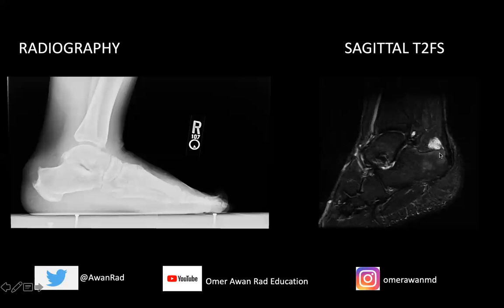We have this prominence or osseous protuberance along the posterior superior calcaneus — this is known as the Haglund deformity. We have three findings: the Haglund deformity, retrocalcaneal bursitis, and distal Achilles tendinopathy. You can appreciate all of these on the x-ray as well. The Haglund deformity with a prominent posterior superior process of the calcaneus, distal Achilles tendinopathy with thickening of the tendon, and soft tissue density replacing the normal fat in Kager's fat pad suggesting retrocalcaneal bursitis. This triad is known as Haglund syndrome.